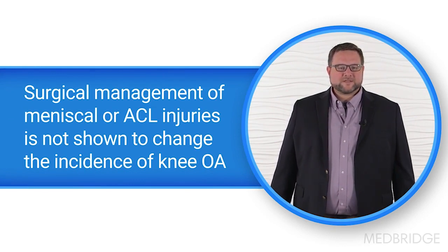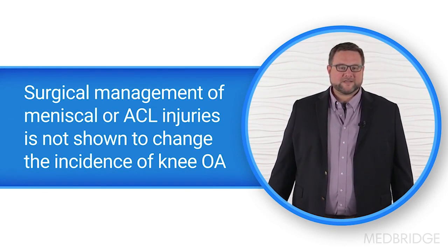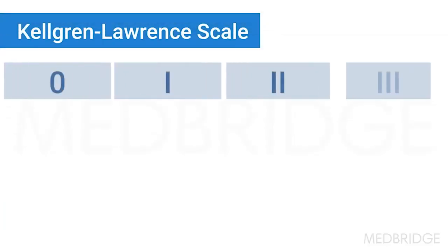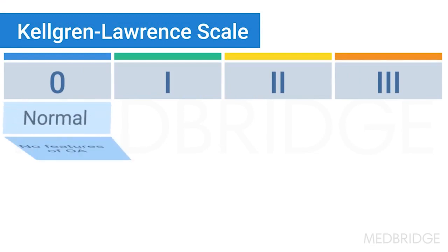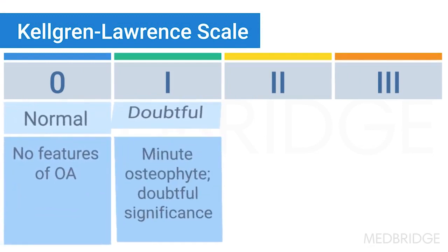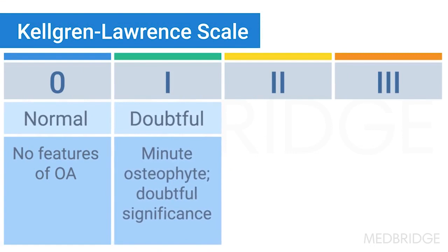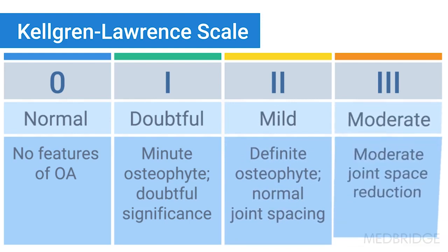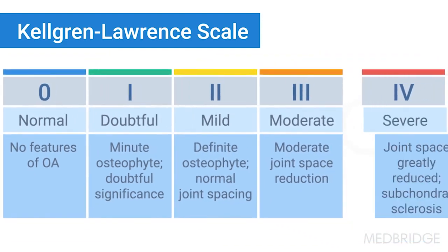There's also the Kellgren-Lawrence Scale, an old scale developed in 1957 that is still widely used. The grading runs from 0 to 3. Grade 0 is no radiographic findings of knee OA. Grade 1 is minute osteophytes that may not be clinically significant. Grade 2 is definite osteophytes with preserved joint space. Grade 3 is osteophytes with joint space narrowing. Definite osteophytes with severe joint space narrowing and subchondral sclerosis would constitute a definite knee osteoarthritis diagnosis.